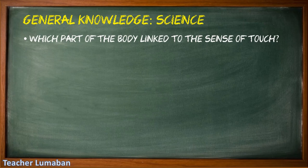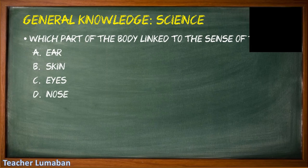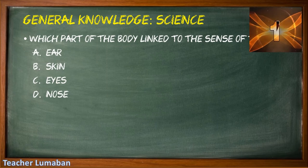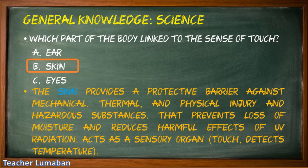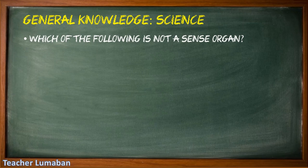Which part of the body is linked to the sense of touch? Letter A: ear, Letter B: skin, Letter C: eyes, Letter D: nose. The correct answer is Letter B: skin. The part of the body linked to the sense of touch is the skin. The skin provides a protective barrier against mechanical, thermal, and physical injury and hazardous substances, prevents loss of moisture, reduces harmful effects of UV radiation, and acts as a sensory organ that detects touch and temperature.